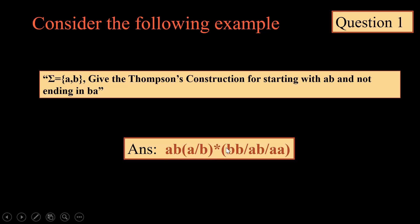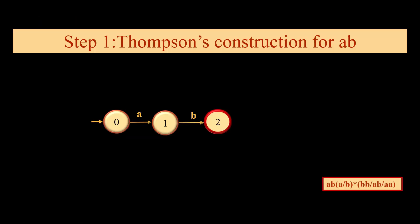And since it is starting with ab but it can have any intermediate combination, we will add universal at this point. And now we will talk about Thompson's construction for this particular regular expression.